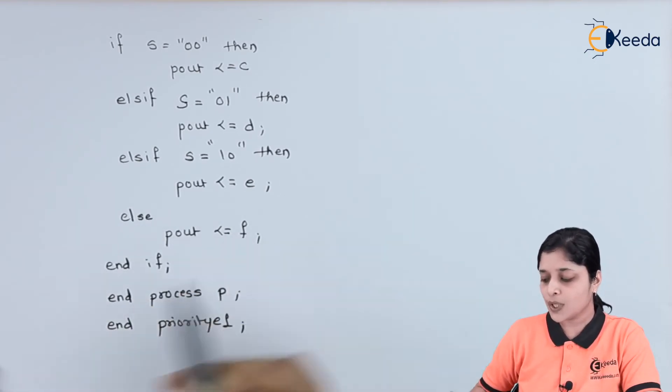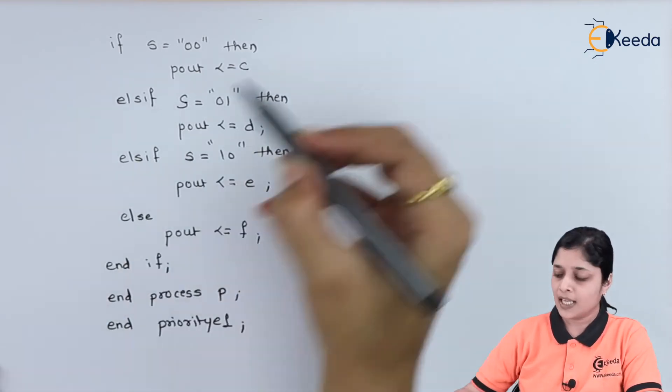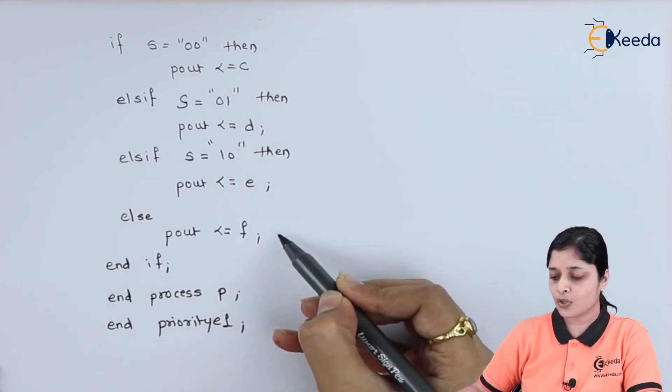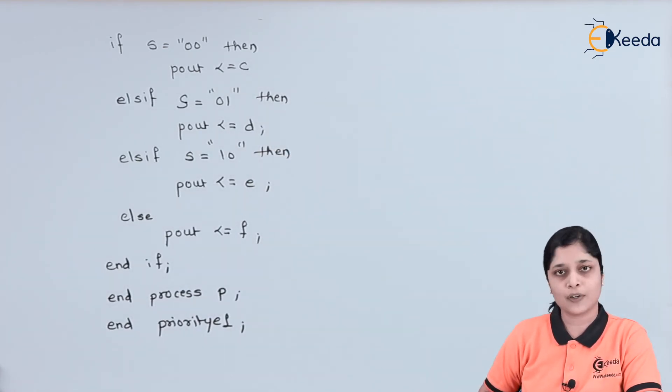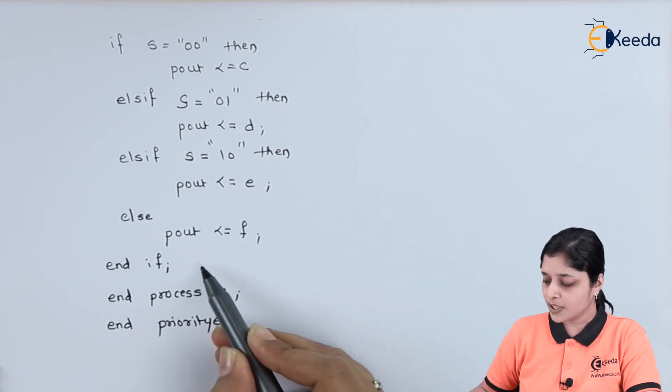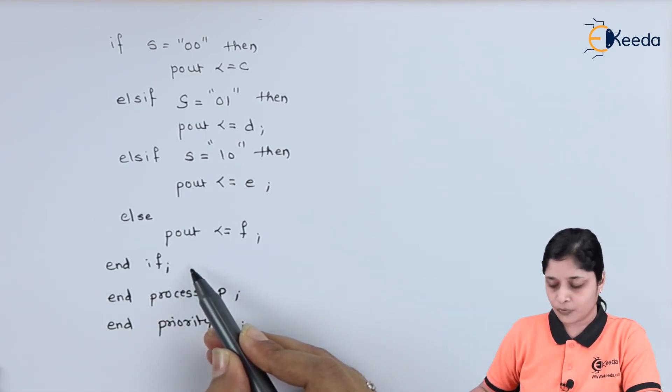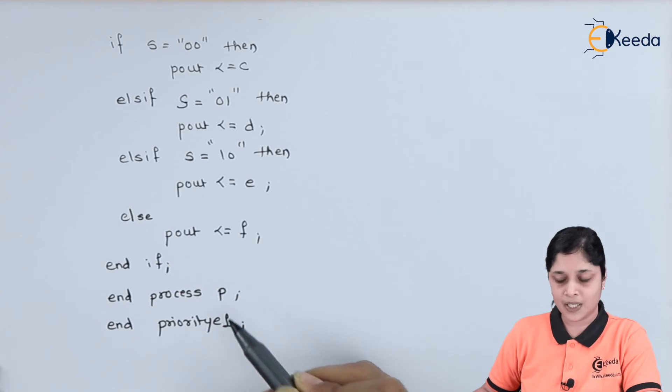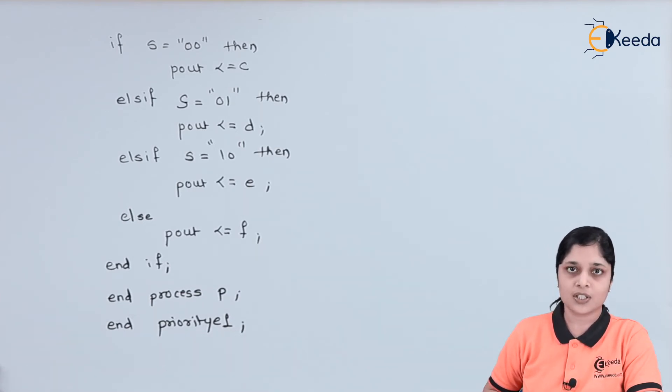Else you can get the output as F. In this way, you have to use the logic of if-else statement and you have to design the priority encoder. After that, you have to end the end statement of if and process P and end your architecture name, that is priority_e1. In this way, this is the program for